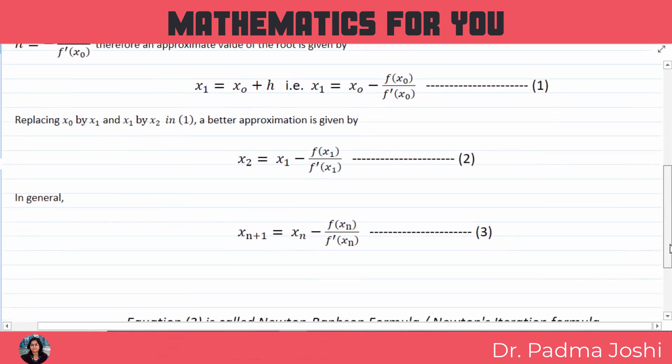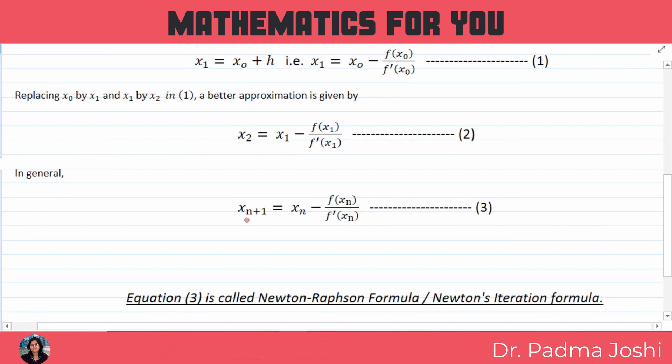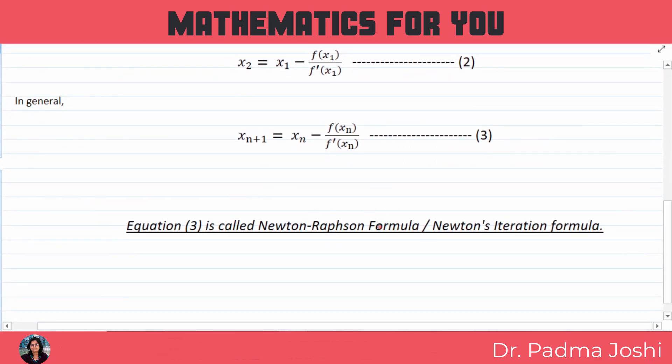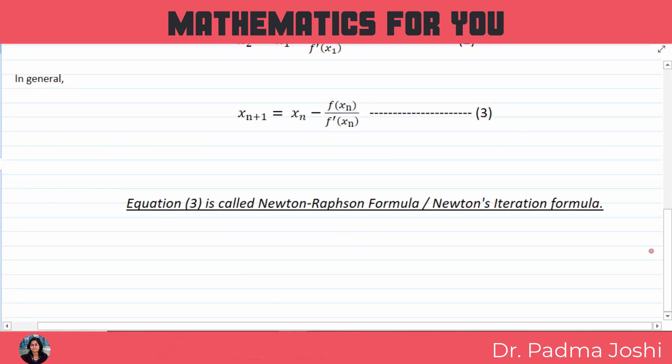Isi tarah se isko generalize kiya ja sakta hai. So that in general we can say that xn plus 1 is equal to xn minus function of xn upon f dash xn, jo equation 3 hai. Yahi Newton-Raphson formula hai, ise hum Newton's iteration formula ke naam se bhi jante hain.